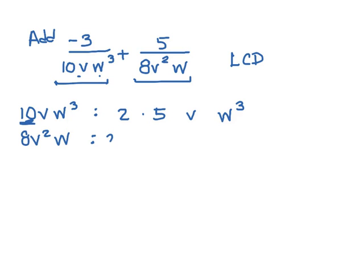Now for my 8v squared w, 8 can be factored into 2 times 2 times 2, so that gives me 8. I don't have any 5s. I have a v squared, and I have a w.